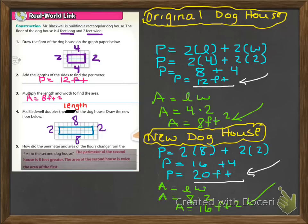The area went from eight feet squared to sixteen feet squared, using the same formula but putting in eight instead of four. For the question 'how did the perimeter and area change from the first to the second doghouse,' write: the perimeter of the second house is eight feet greater, and the area of the second house is twice the area of the first.